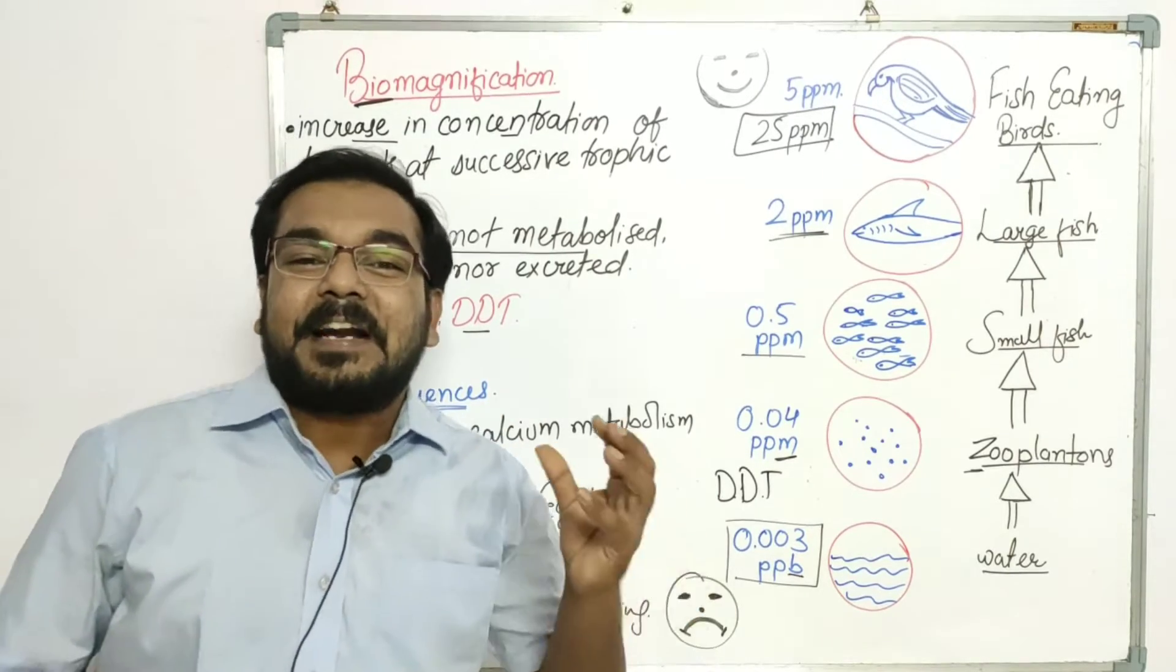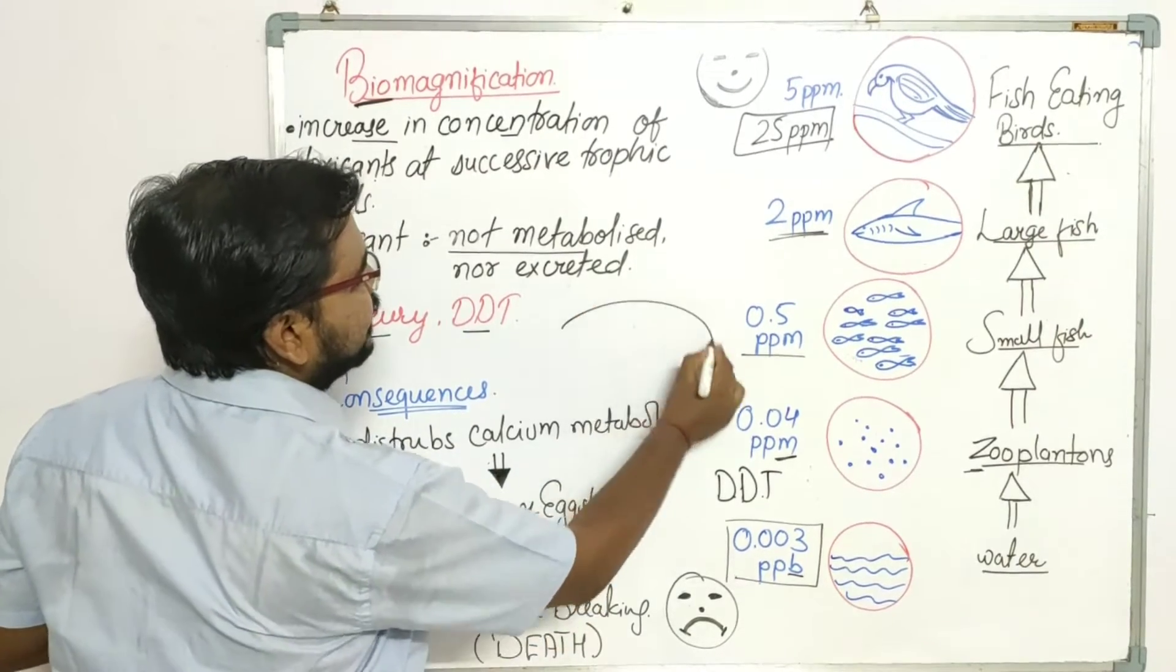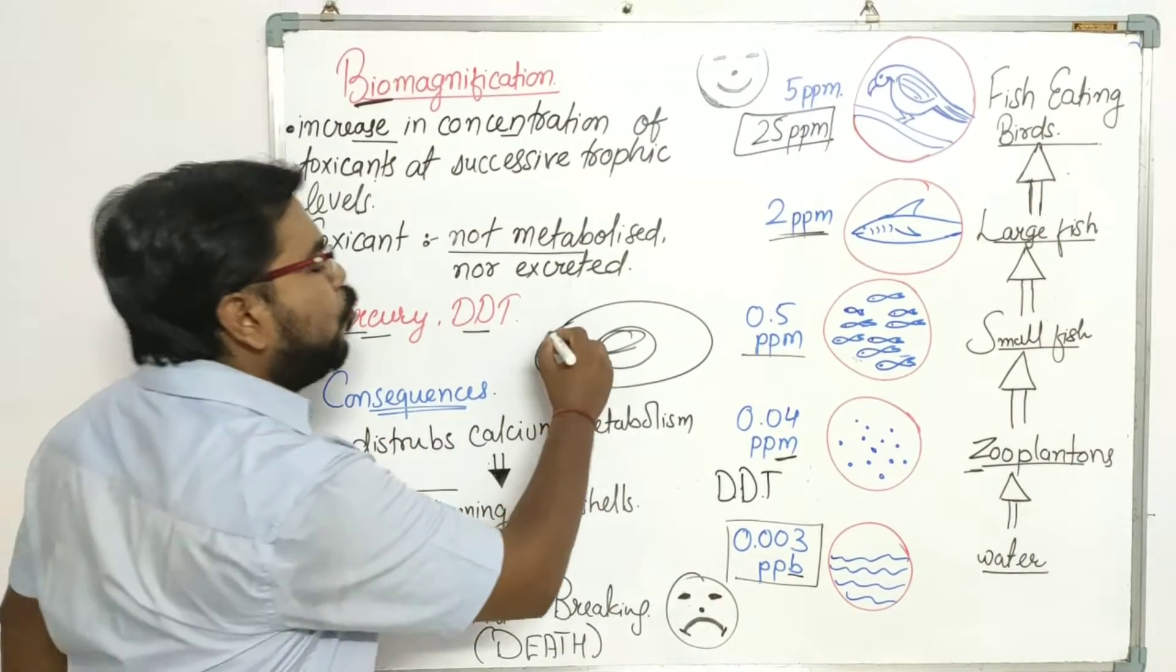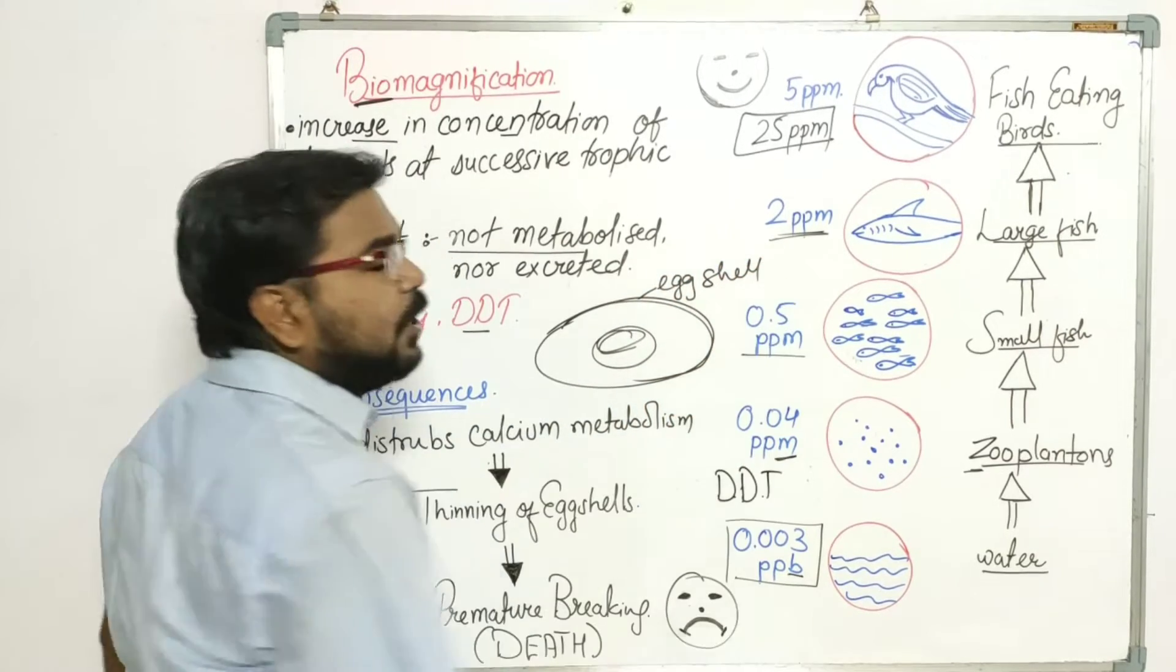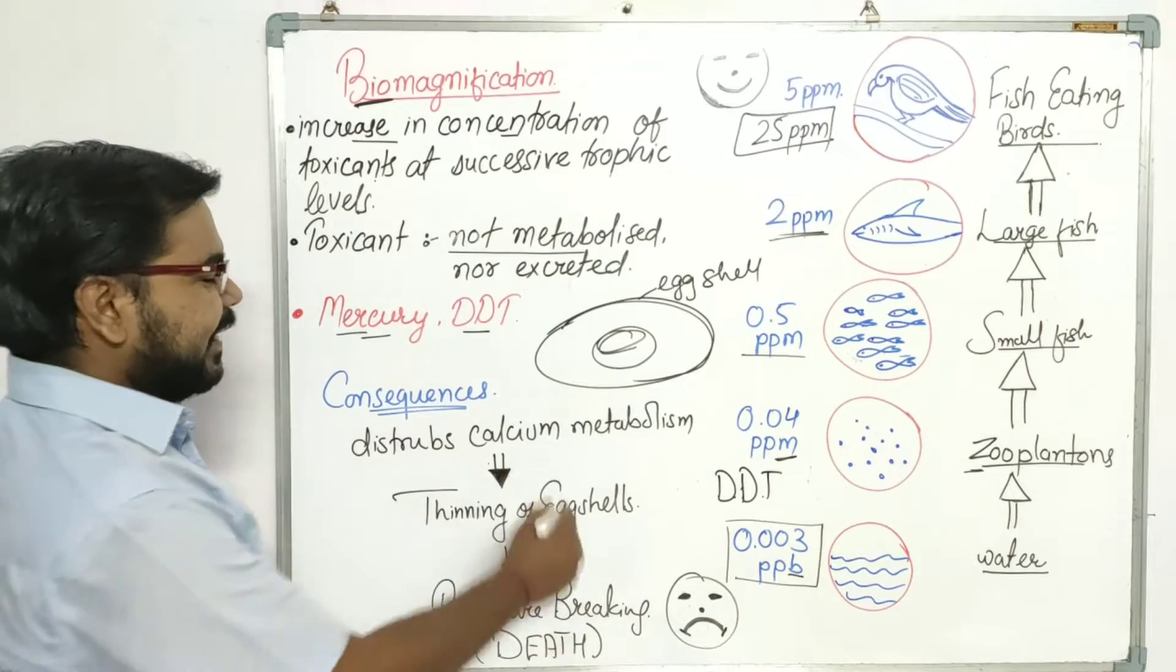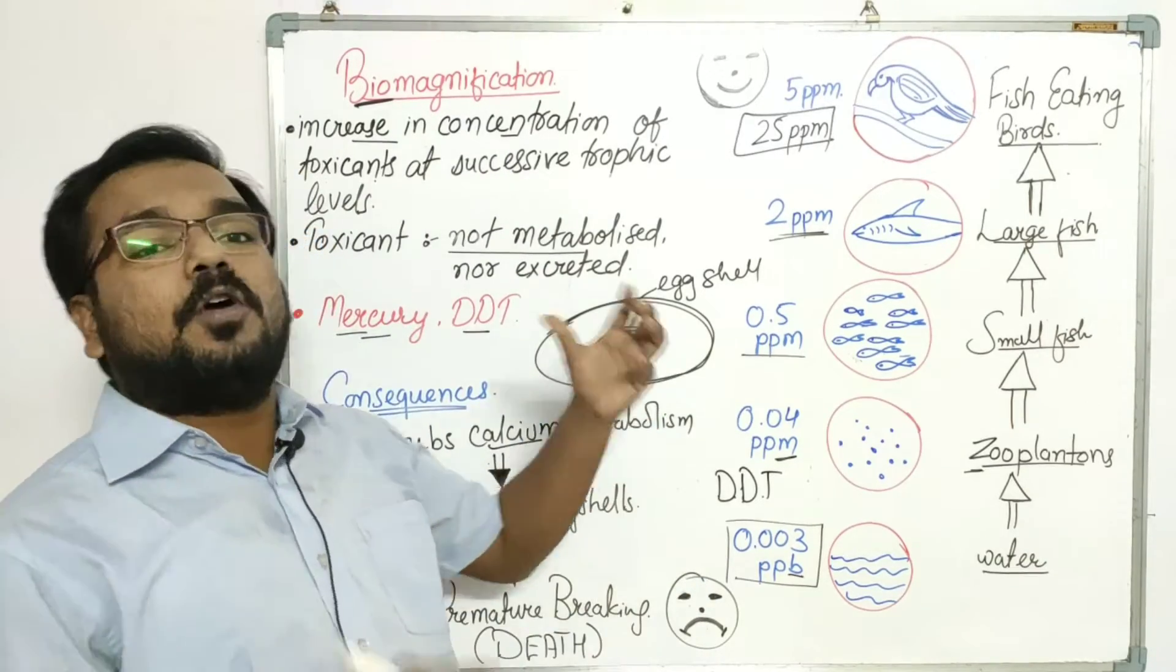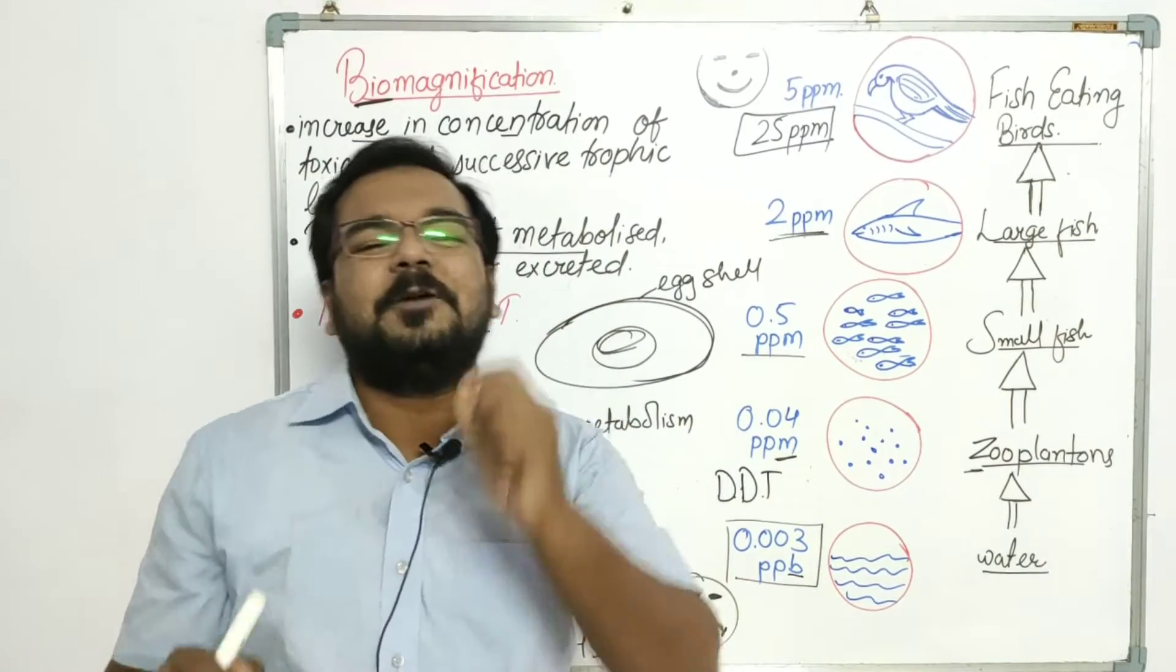But you know the birds are oviparous. That means they lay eggs. So these are eggs. You know this is an egg. It will develop to an extent so that it can support this egg well, means that the egg shell will become very thin.